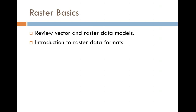If you had to define for somebody what vector data is, how would you describe that? Josh said point, polygon, polyline. Yeah, I think that's a good way. What else could you add to that?